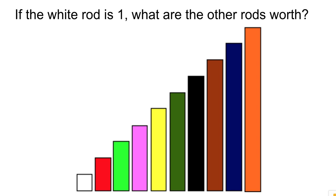If the white rod is worth one, then we would expect these rods to all be growing by a value of one each time — so two, three, four, all the way up to the orange rod representing ten. Now that we have an idea what the rods are worth, let's use these rods to define what division is.